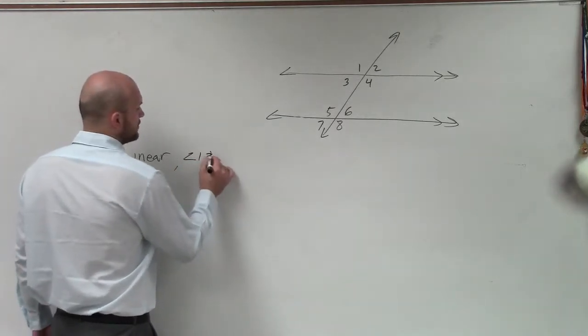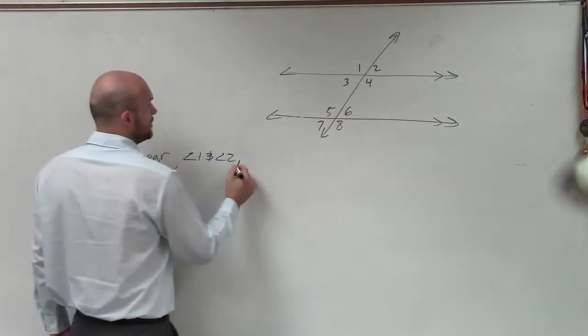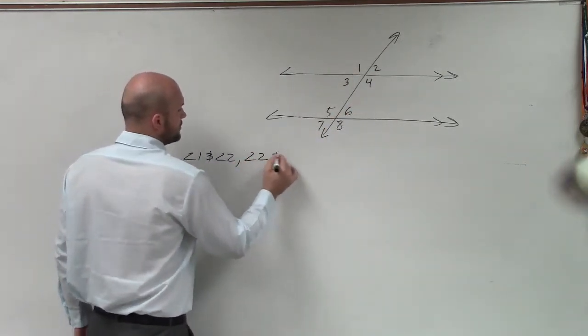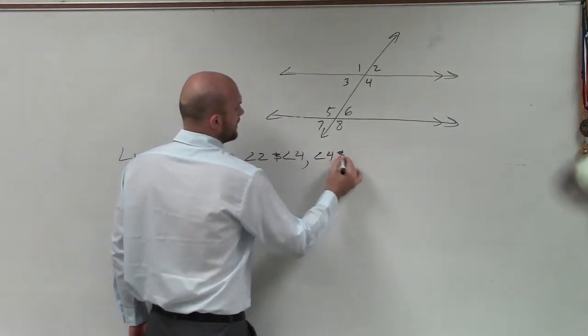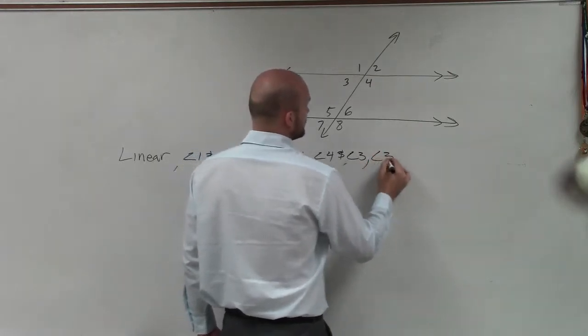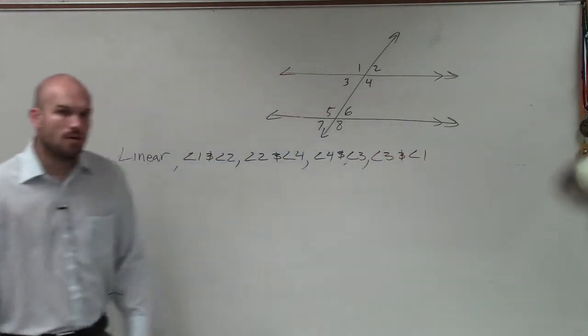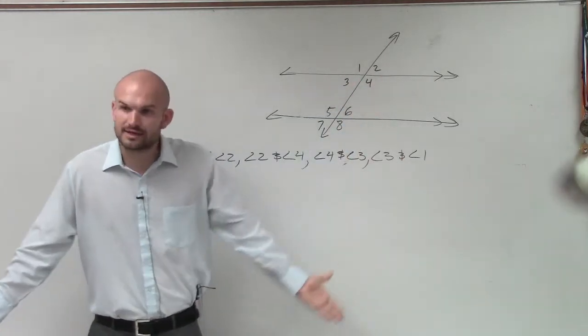So I just need to figure out what two angles make up a straight line. Well, guys, there's a lot of linear pairs. Angle one and angle two, right? Those two angles make up a linear pair. You could say angle two and angle four. Angle four and angle three. Angle three and angle one. Do you guys see how each one of those all make up a line? So those are all a linear pair.